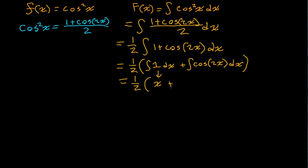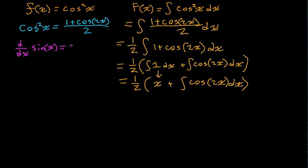Plus the integral of cosine of 2x, which we don't know yet. How can we solve that? Because cosine of 2x is still kind of unfamiliar, because we know the integral of cosine of x — the indefinite integral of cosine of x — that's going to be sine of x. We know that the derivative with respect to x of sine of x is equal to cosine of x, and therefore the antiderivative of cosine of x is going to be equal to sine of x.